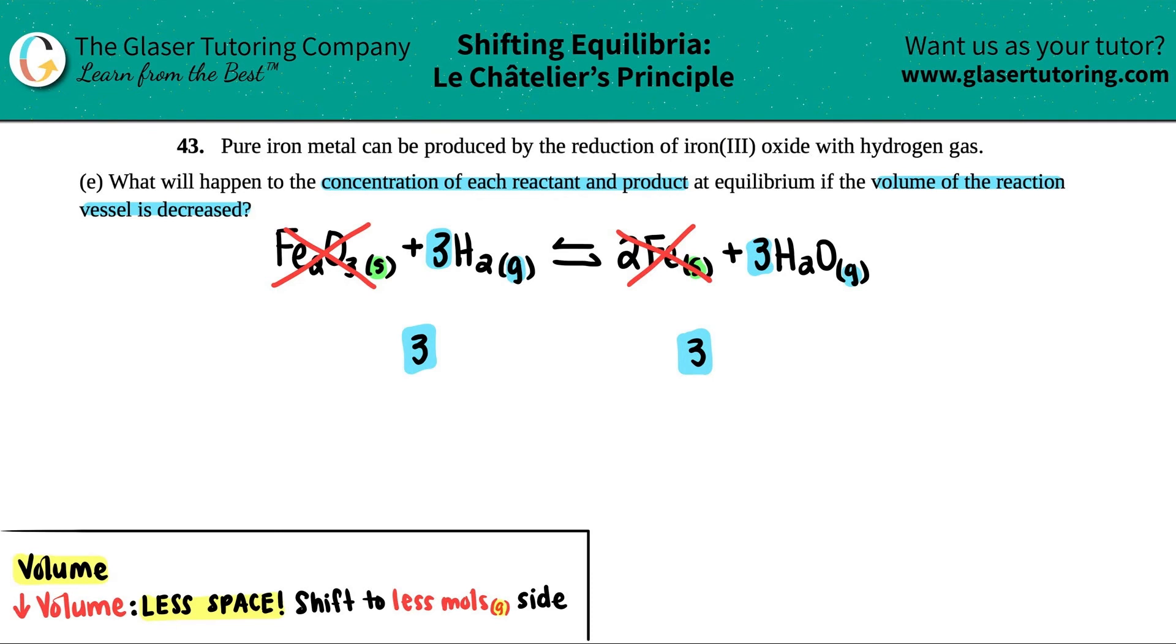So what's going to happen? Is anything going to happen? Yeah, you got it. Yeah, no, there's nothing that's going to happen. There is no number that's lower, so there's no side that's going to be favored. So in this case, what's going to happen to the concentration of each reactant and product? Nothing. No effect.